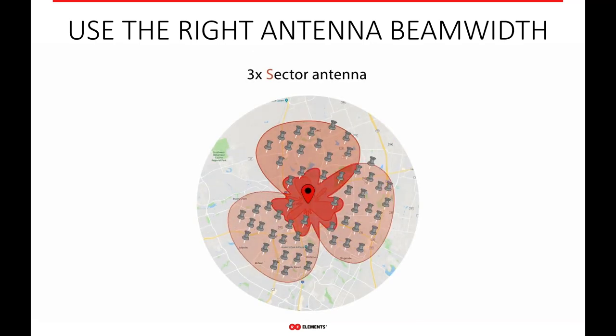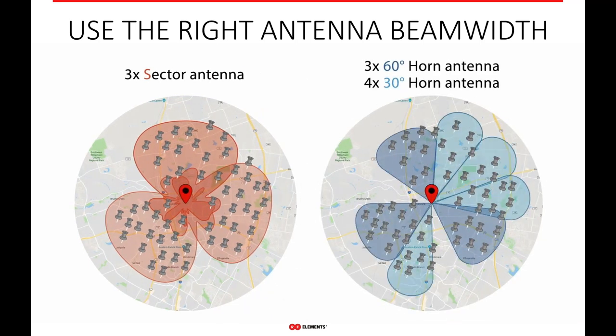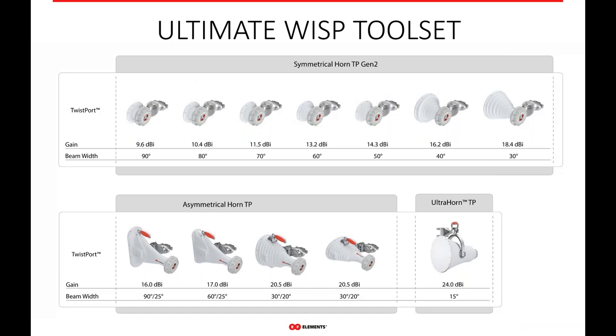Using the right antenna beam width is also very important. There may be sections from your tower where you don't have any customers, so there's no need to use wide antennas everywhere. With all the different antennas and beam widths we offer, you can customize your coverage and use the proper gain and beam angle horn for your typical deployment. This is a way to reduce noise on your network.